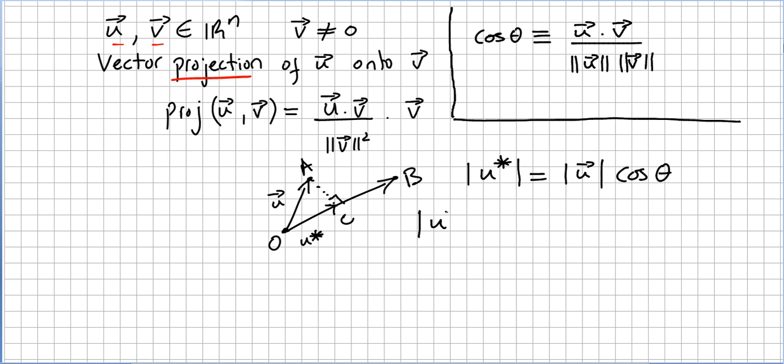So u* is u times cosine of theta. But we defined the cosine of theta as u · v dividing the norms, right? So I replace cosine of theta by u · v dividing the norms. So here we can cancel those two, and we have u · v dividing the norm of v. We are not still here, but we can multiply this.